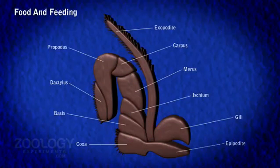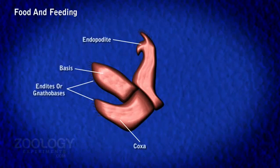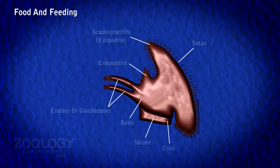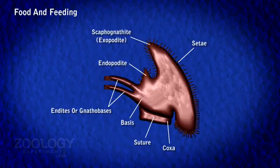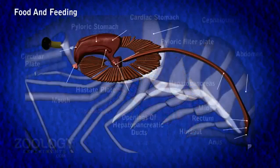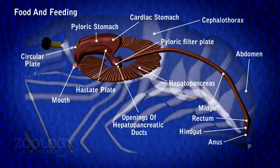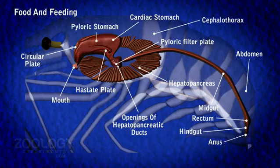The chelate legs, aided by the third maxilliped, capture and convey food to the mouth. The coxae of the second maxilliped hold the food while the incisor processes of the mandibles cut it into smaller pieces, which are swallowed with the help of maxillipeds, maxillules, and maxillae. Inside the buccal cavity, the molar processes of the mandible masticate the food, which is then conveyed to the cardiac stomach through the esophagus.